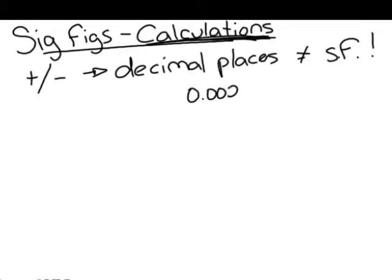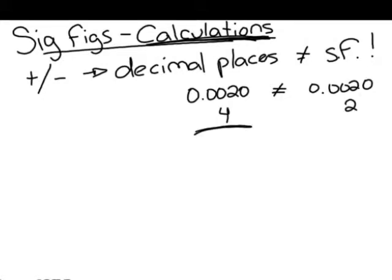As you'll notice, this number has four decimal places, while the same number only has two sig figs. There is an additional video available to you should you need to go over the difference.